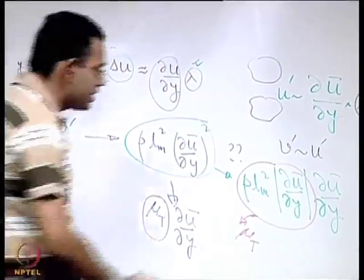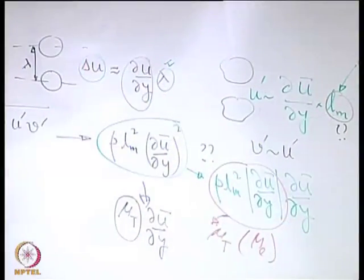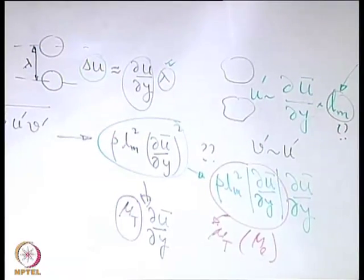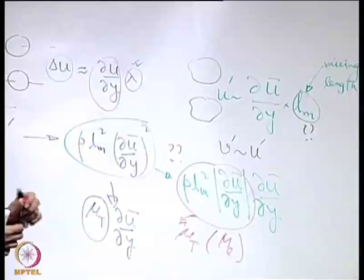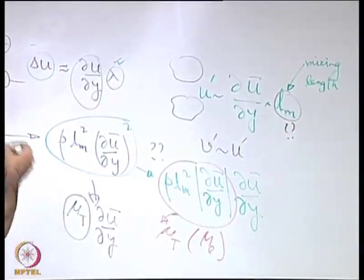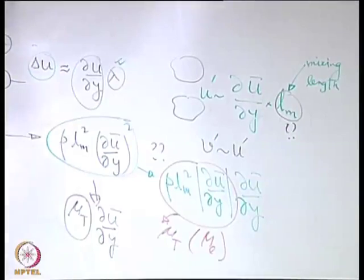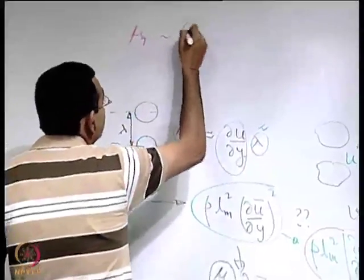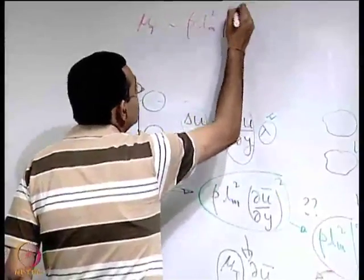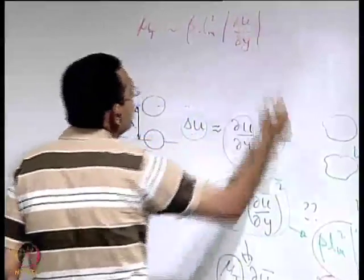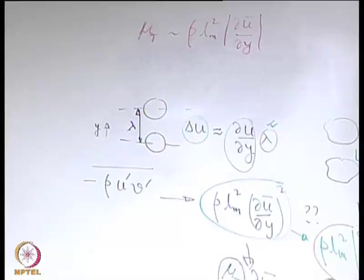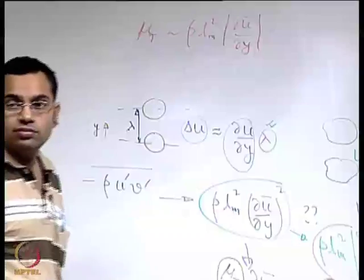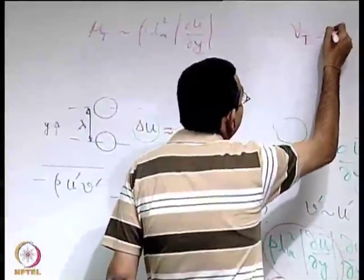The summary of Prandtl's initial work is that the turbulent viscosity mu_t — also called eddy viscosity mu_e, because it arises from the interaction of fluctuating velocity components of eddies — is related to the mixing length and velocity gradient. A kinematic eddy viscosity is also considered, defined as mu_t divided by rho, sometimes written as nu_t.